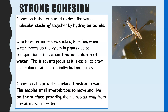Strong cohesion is the fifth and final property — cohesion means water molecules sticking together due to hydrogen bonds. Because water molecules stick together, water can move up the xylem in plants in a continuous column rather than moving up a droplet at a time, which is much easier to pull up. Cohesion also provides surface tension, which allows certain animals to live on the surface of ponds, providing a habitat and helping them avoid predators within the water.